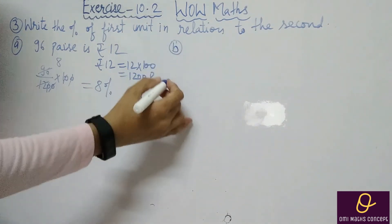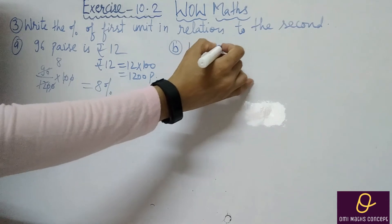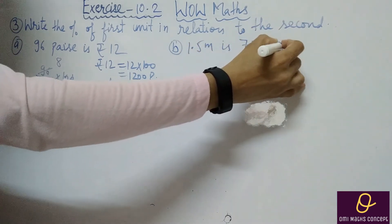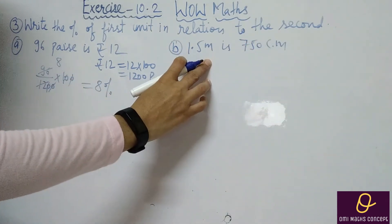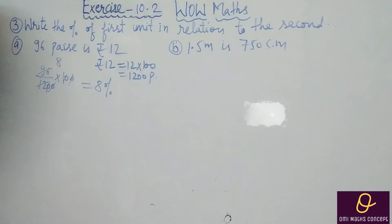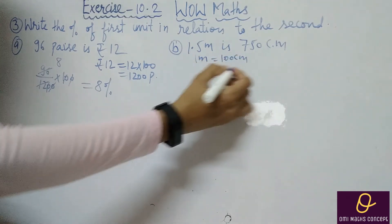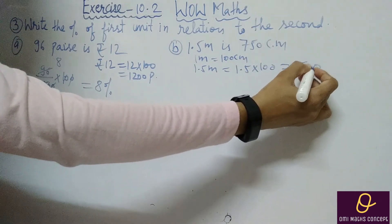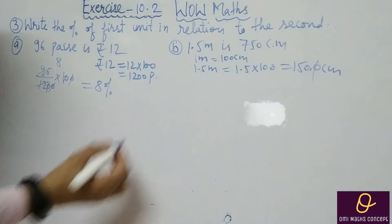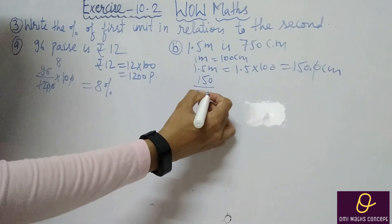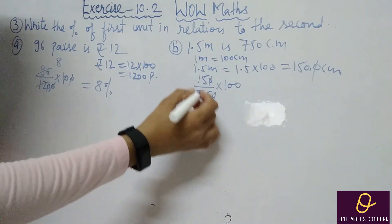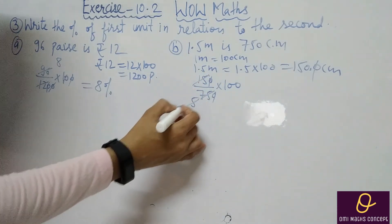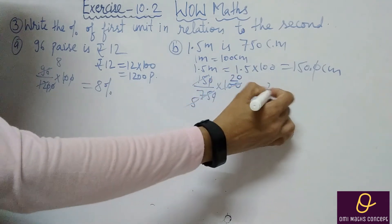Part B: 1.5 metres and 750 centimetres. One is in centimetres, the other in metres, so we convert metres to centimetres — converting the larger unit to the smaller one. 1 metre = 100 cm, so 1.5 metres = 1.5 × 100 = 150 cm. Now compare: 150 divided by 750 into 100. Five fives are 75, simplifying gives 20%.